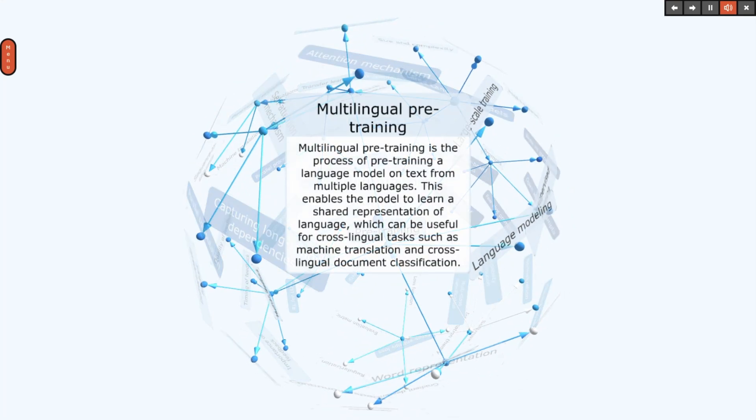Multilingual pre-training is the process of pre-training a language model on text from multiple languages. This enables the model to learn a shared representation of language, which can be useful for cross-lingual tasks such as machine translation and cross-lingual document classification.